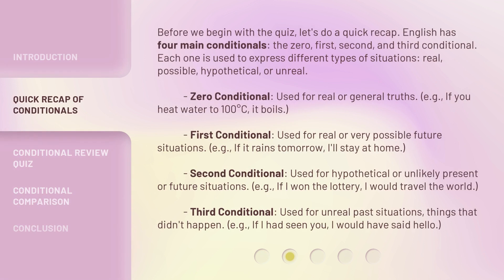Before we begin with the quiz, let's do a quick recap. English has four main conditionals: the zero, first, second, and third conditional. Each one is used to express different types of situations — real, possible, hypothetical, or unreal.